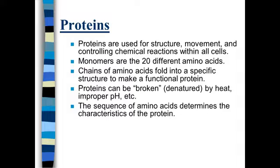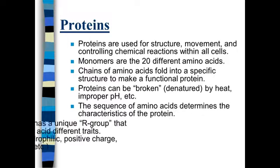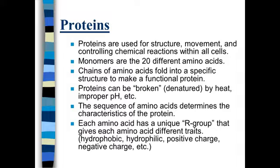So it's the sequence of amino acids — the order they're in — that changes the characteristics of the protein. That's what determines its shape and what the protein does. Each amino acid, which is the monomer, has a particular R group that gives that amino acid its various traits.